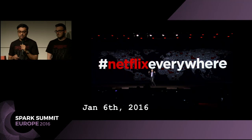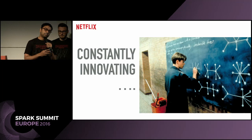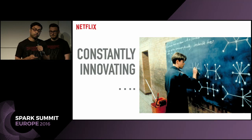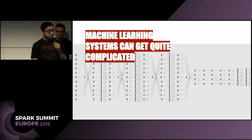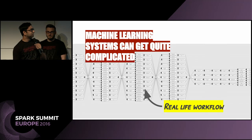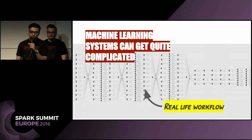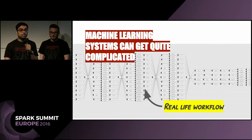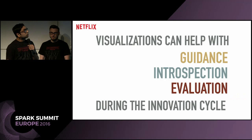With all these things going on at Netflix, we are constantly innovating and really pushing the boundaries of machine learning. What that does is our machine learning systems start to look really, really complicated. Here is a real-life workflow going through various different versions of a model, training and retraining, and doing a lot of data cleaning. As a machine learning researcher working on something as complicated as that, what helps is having visualisations to guide you through that innovation cycle at every step.